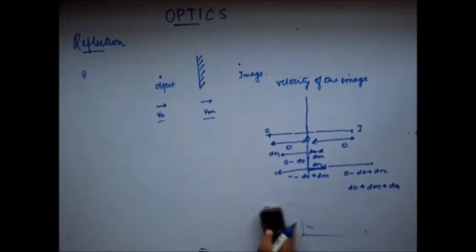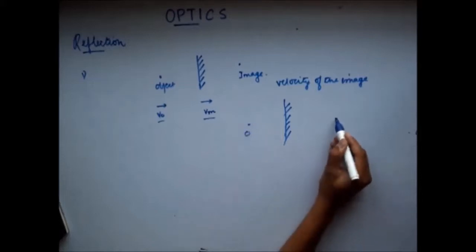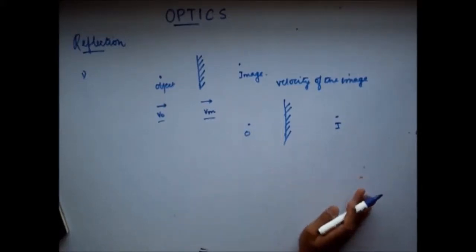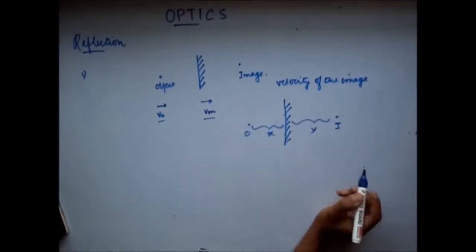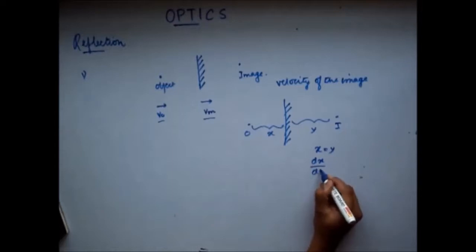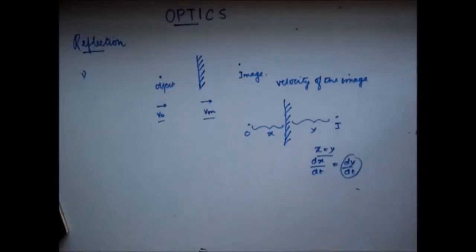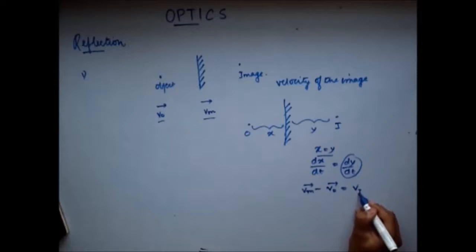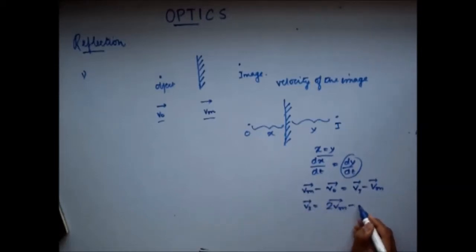A quicker method: here is the mirror, the object, and the image. Whatever the velocities of these three may be, I need to always satisfy one rule. If the distance from the object to the mirror is x, and from the mirror to the image is y, then x must always equal y. Differentiating, the rate of change of x equals the rate of change of y. The rate of change of x is velocity of mirror minus velocity of object; the rate of change of y is velocity of image minus velocity of mirror. This gives: velocity of image equals 2 times velocity of mirror minus velocity of object.